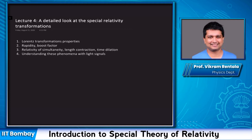It wasn't until Einstein that the physical meaning of these Lorentz transformations was realized. Einstein independently derived these Lorentz transformations from his postulates of Special Relativity. Today we're going to look at some properties of the Lorentz transformation and understand some of the mathematical aspects of it.